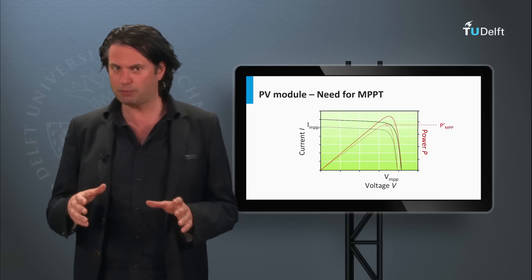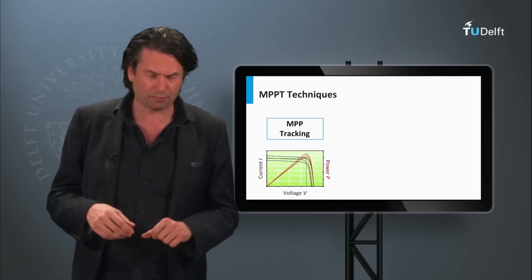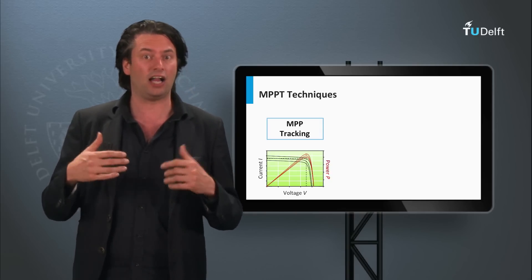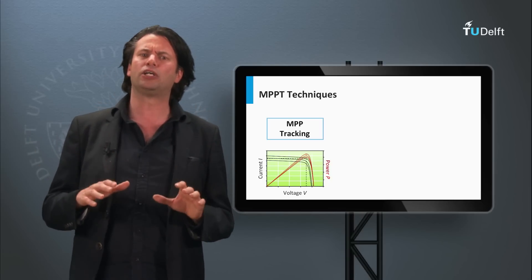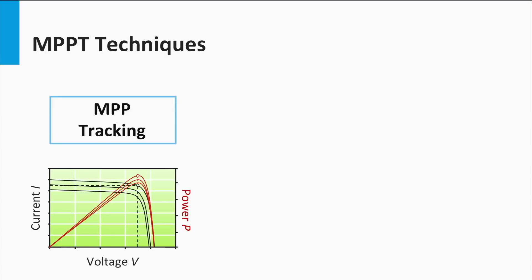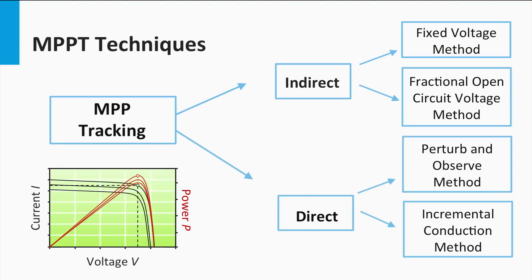The devices that perform this process are called MPP trackers. An MPPT device is nothing but a hardware implementation of an MPPT algorithm or algorithms. There are several algorithms to track the MPP effectively, also called MPPT techniques. Some of the modern literature talks about two broad categories: indirect MPP tracking, like the fractional open-circuit voltage method, or direct MPP tracking, like the perturb and observe method or the incremental conductance method. Each of these techniques has its own advantages and disadvantages.